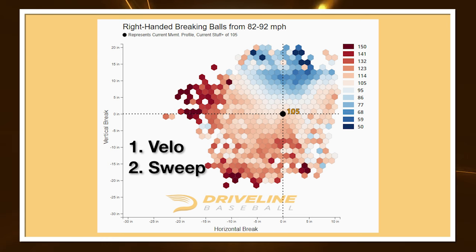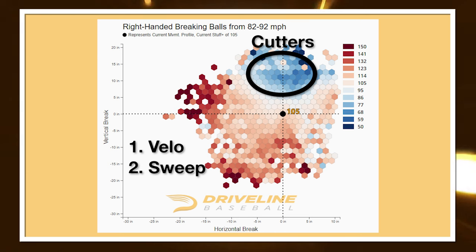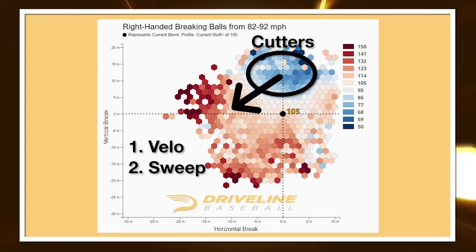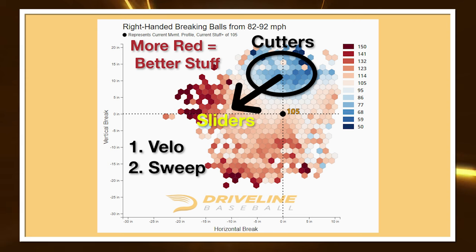Or number two, it has to have a lot of glove side movement — because all stuff models, deep down in their circuitry, really just want cutters to be sliders. Stuff models are saying: take that cutter that you think is for weak contact and just give me a whiff. More movement and more velocity generally means more whiffs. That's generally why stuff models aren't too keen on cutters.